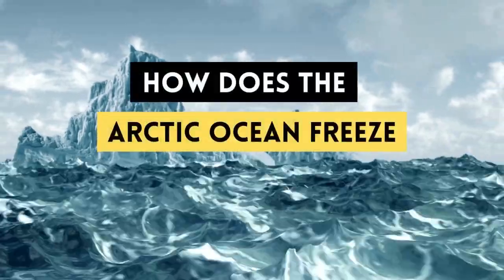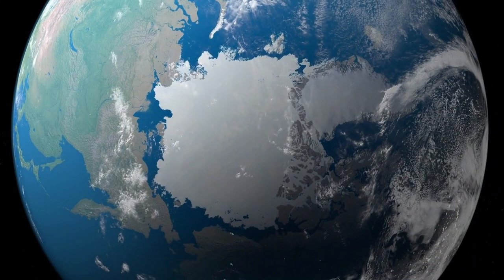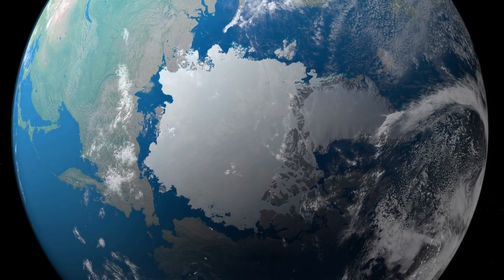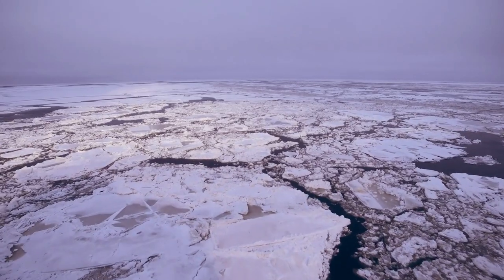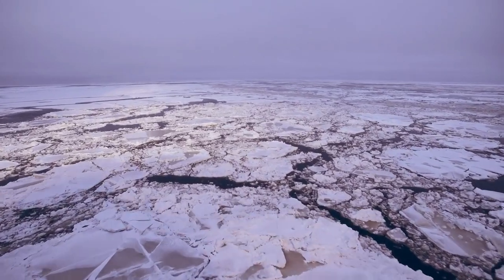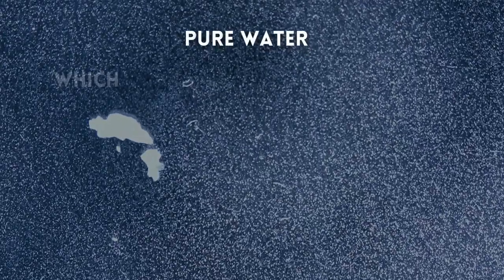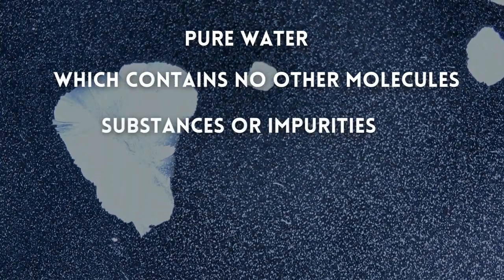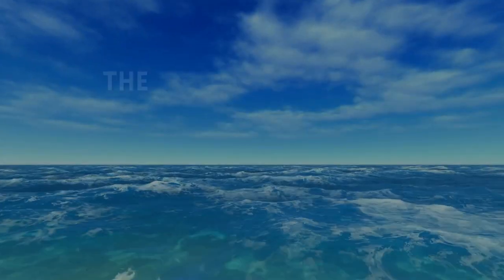Today we will discuss how the Arctic Ocean freezes. It's difficult to imagine such a huge expanse of water freezing solid, so how is it possible? Arctic sea ice is that which forms on the Arctic Ocean during the winter months. Pure water, which contains no other molecules, substances, or impurities, freezes at zero degrees Celsius.